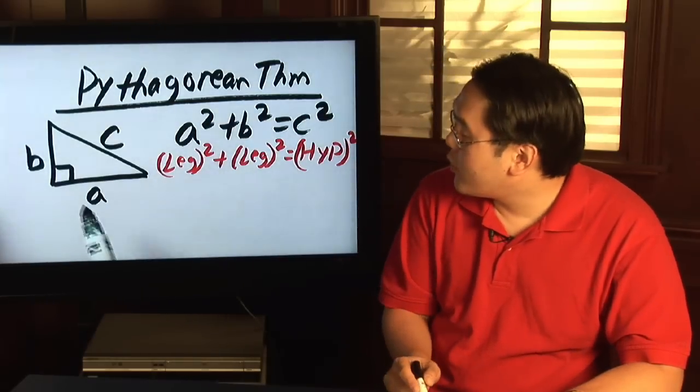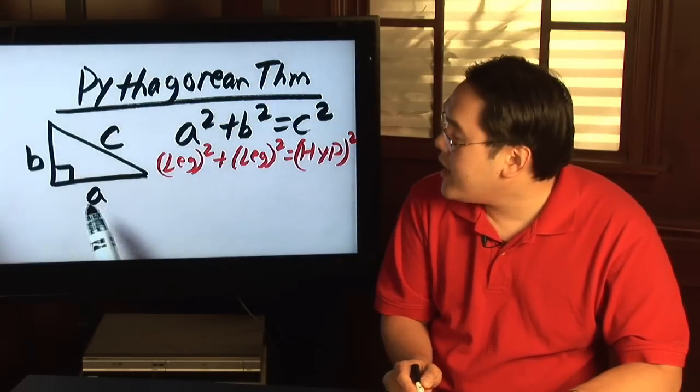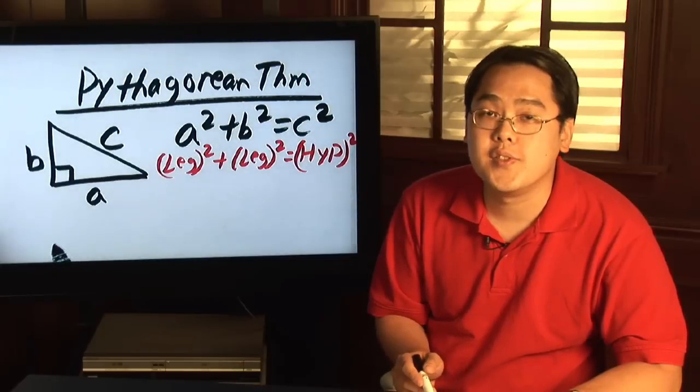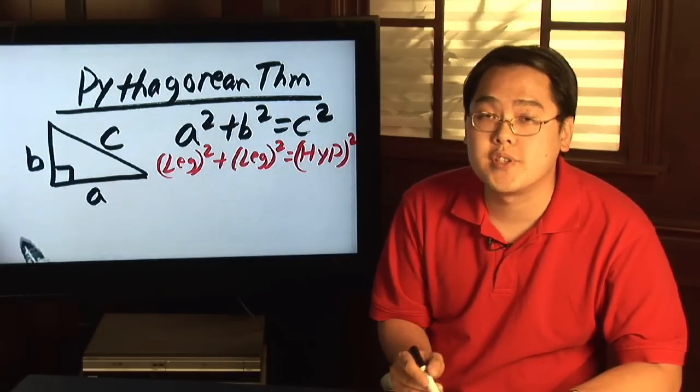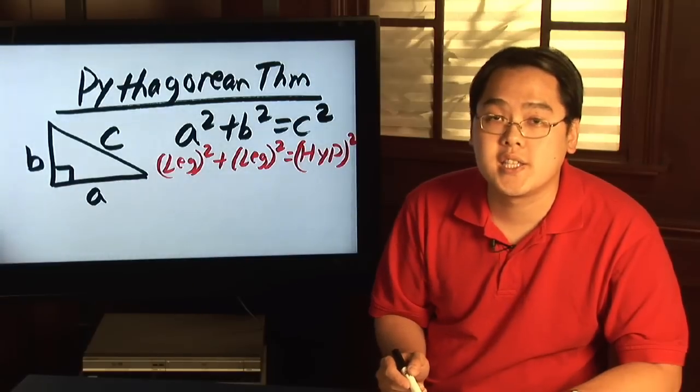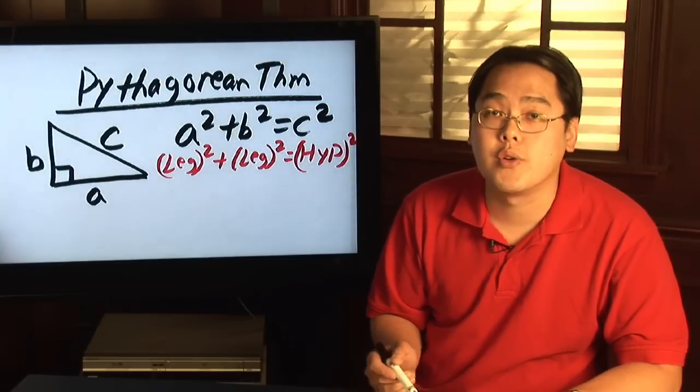In a right triangle you have the sides A, B, and C. A and B are known as your legs. Those are sides that represent and support the right angle, and C is the side that's facing the right angle known as the hypotenuse.